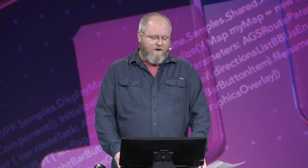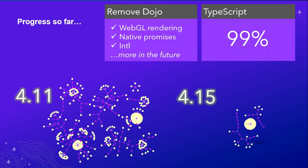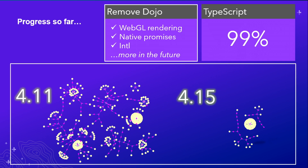In order to achieve this, we will deliver JS modules as an additional option alongside our current AMD modules. First, we are working to remove Dojo. Browsers now have what we need, such as WebGL for graphics rendering, native promises for asynchronous tasks, and internationalization. So Dojo is no longer needed. You can see the progress we've made in this diagram at the bottom between last year's Dev Summit release and this year's Dev Summit release. The circles in yellow are classes in the API that use a Dojo plugin, so you can see the progress we've made to get rid of that.